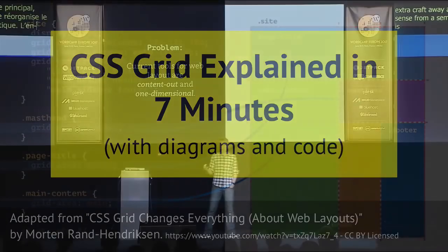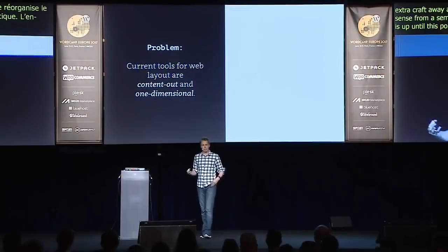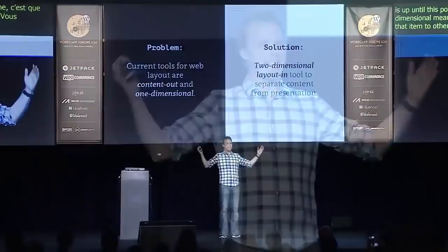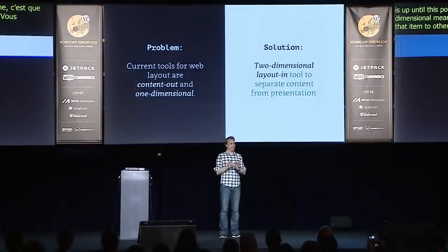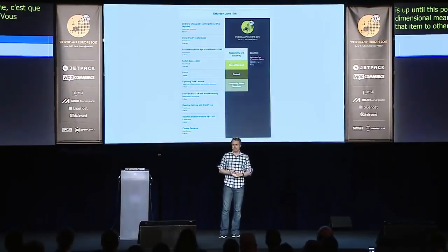Up until this point, all our layout tools have been content-out and one-dimensional, meaning you apply a layout to an individual item, and then you have to relate that item to other things. What we need is a two-dimensional layout that works layout-in. And that's what CSS Grid gives us.